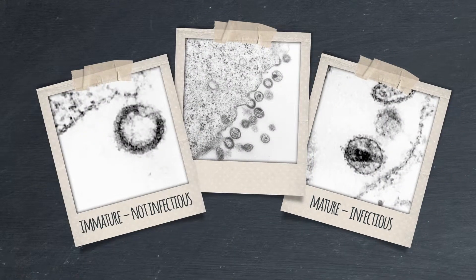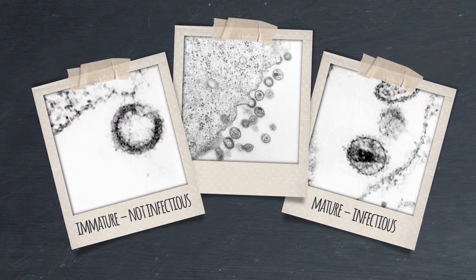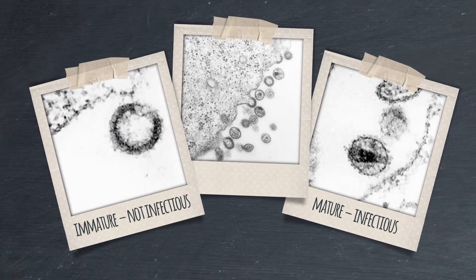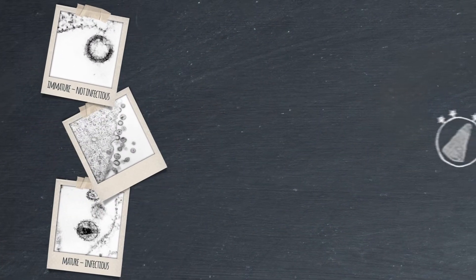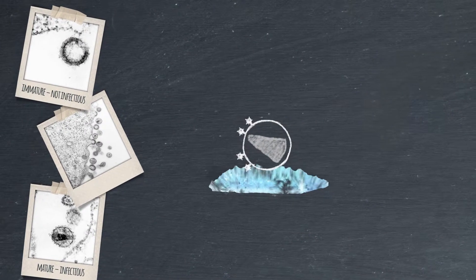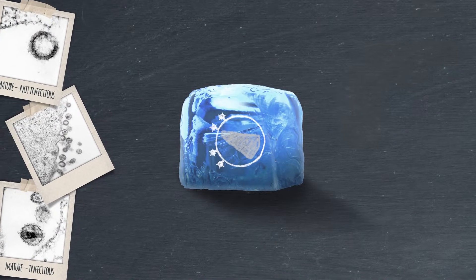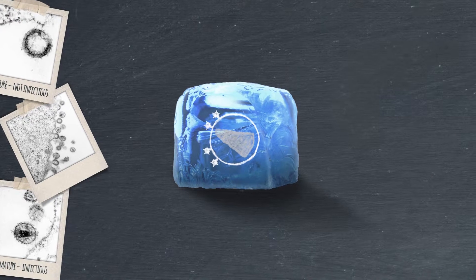But HIV particles are so small that they're invisible in conventional light microscopes. Snapshots of the virus can be taken with an electron microscope, but the particles have to be chemically fixed or frozen — and information on dynamic changes is lost.